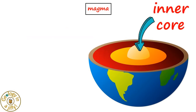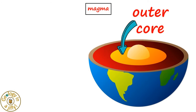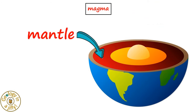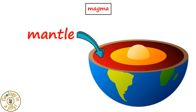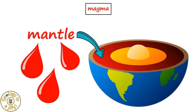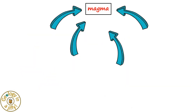For those that do not know, the inner core forms the centre of our planet, this surrounded by the outer core. The mantle surrounds this, with a crust making the outermost layer of our planet. The mantle is made of a very hot, almost liquid plastic rock, which we call magma.